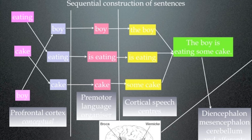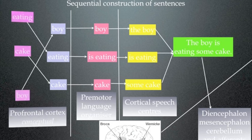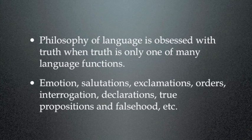So all we're doing with language is transferring knowledge from my mind to yours. I'm simply transferring a series of semantic concepts — eating, cake, boy — putting them in order and transferring them to your mind so that you understand. And that's all language is. Now in this model, the philosophy of language unfortunately is obsessed with truth, when truth is only one of many language functions.